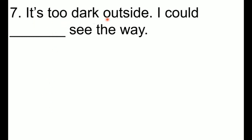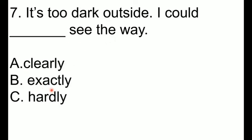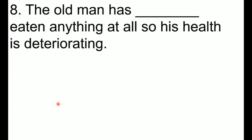Number seven: It's too dark outside. I could blank see the way. A. Clearly, B. Exactly, C. Hardly, D. Nothing. The correct answer is option C. Hardly.